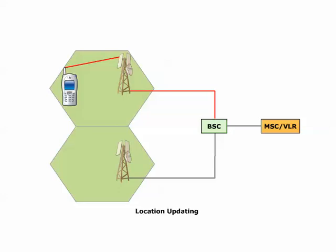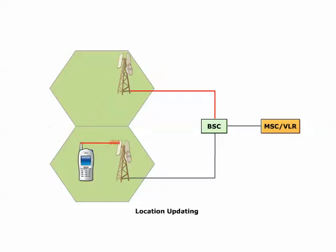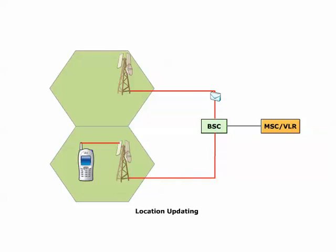If a handover is required, the BSC orders the BTS in the new cell to activate a TCH. Once the new TCH is acknowledged, the BSC sends a message to the MS via the old BTS with information about the frequency, time slot, and output power to change to. The MS tunes to the new frequency and sends handover access bursts on the appropriate TS via FACCH. When the BTS detects the HO access burst, it sends physical information containing the timing advance to the MS on the FACCH. The BTS also informs the BSC by sending an HO detection message and the new path through the group switch is connected. The MS sends a handover complete message, and the old BTS is ordered to deactivate the old TCH and its associated signaling channel, SACCH.